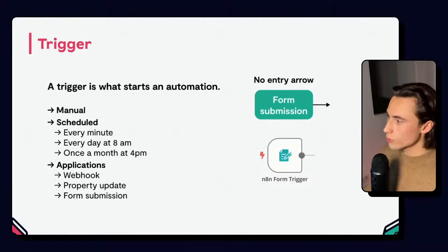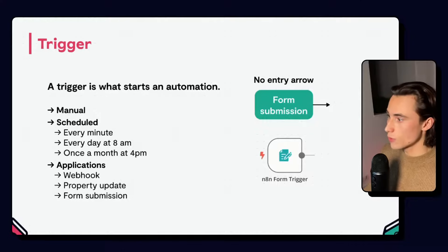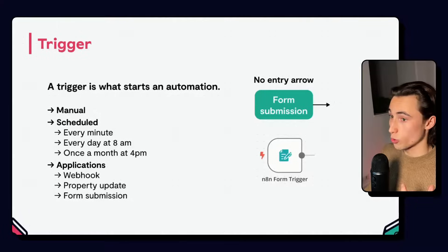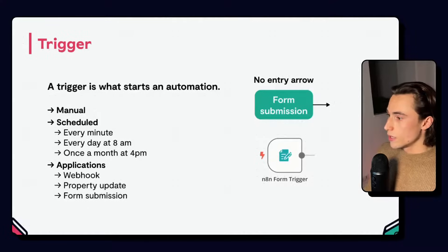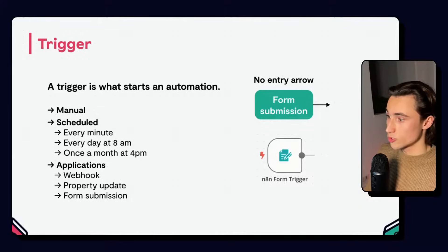There are many different kinds of triggers. A trigger can be manual, so executed manually; it can be scheduled, so every minute, every day at 8am, once a month at 4pm; or it can be linked to applications. We can trigger a workflow when we receive a webhook, when a property is updated in a CRM, or when a form is submitted. Under the form submission block, you can see an example of an N8N node — the N8N form trigger — which allows you to trigger a workflow when a form is submitted using the native N8N form trigger.